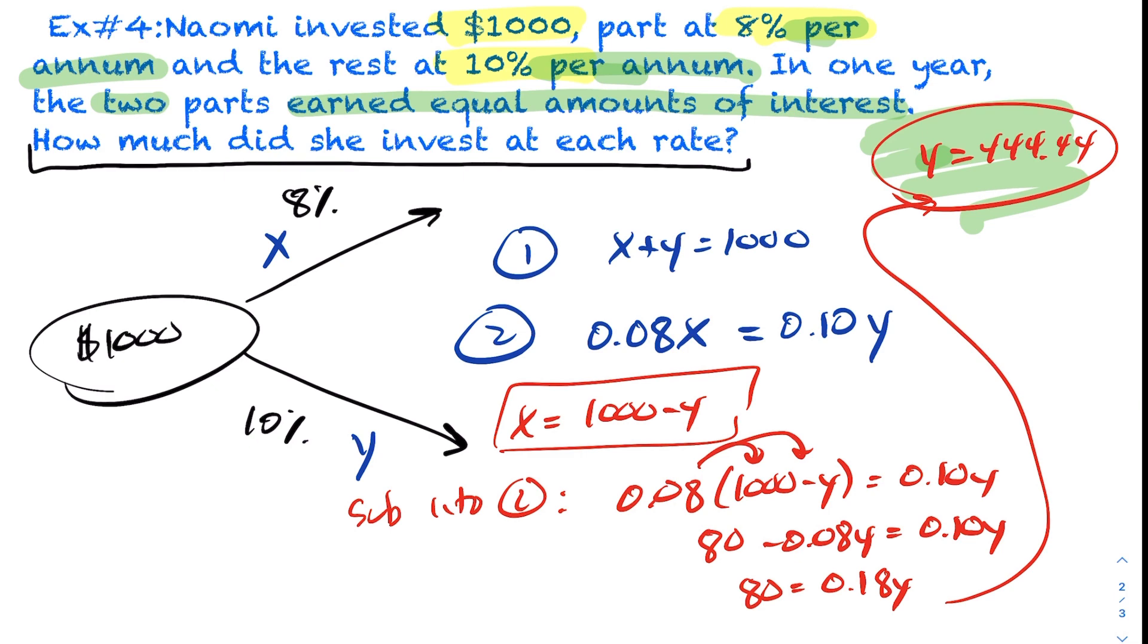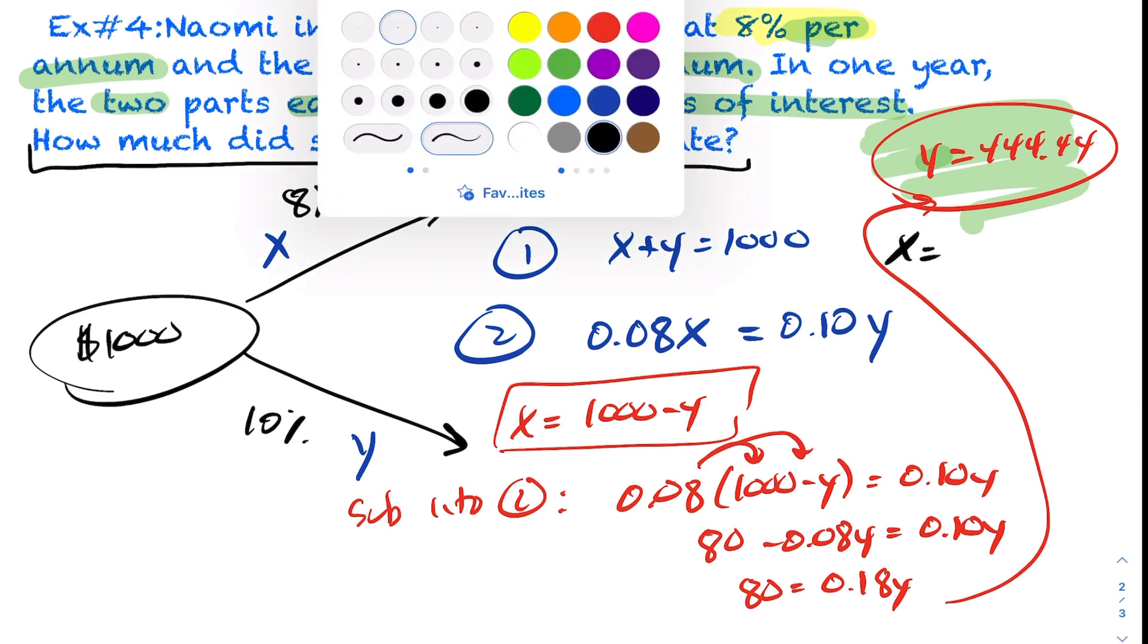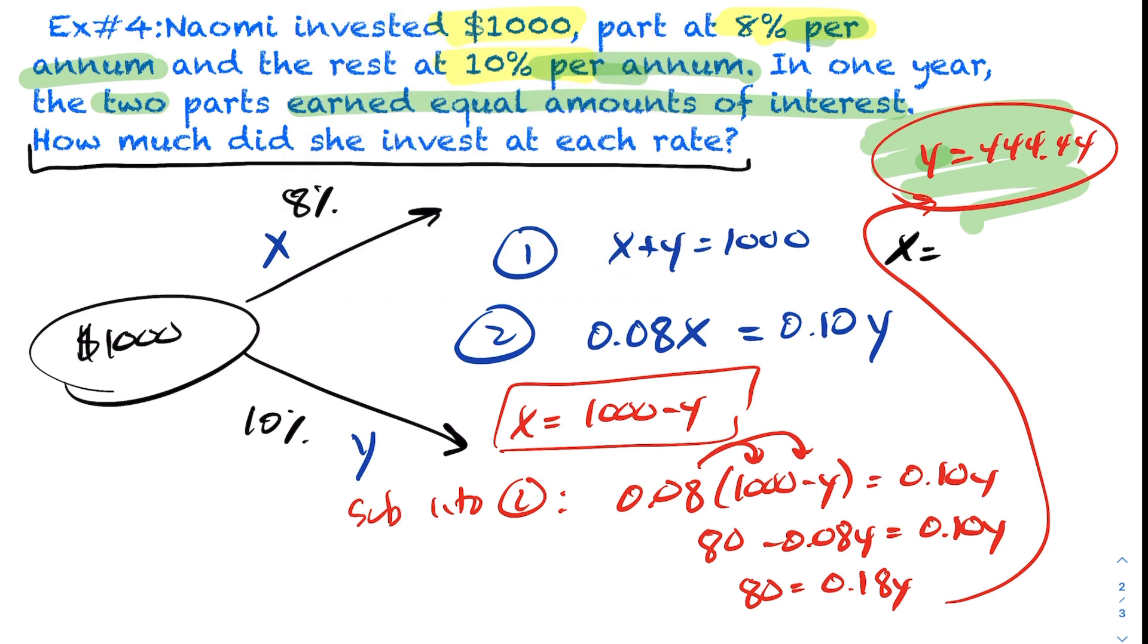Now, how much is in the other one? Well, it has to sum to be 1,000. So we take 1,000 minus $444.44, and you end up getting $556.56. And in this case here, this is the amount of money invested at 8%. So $556.56 was invested at 8%, and $444.44 was invested at the 10% interest rate.